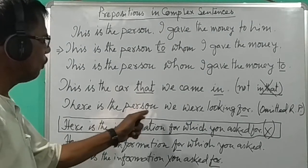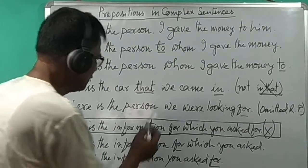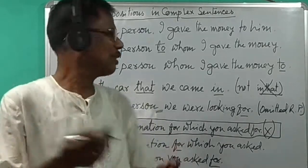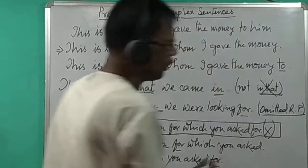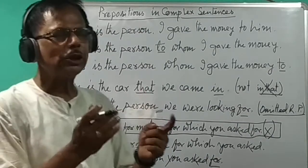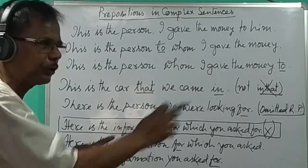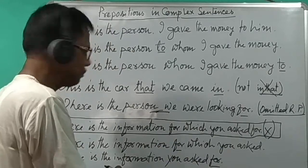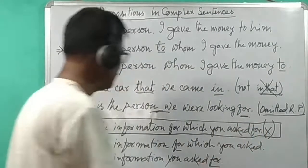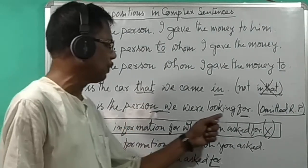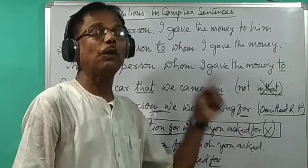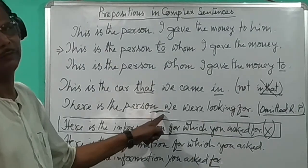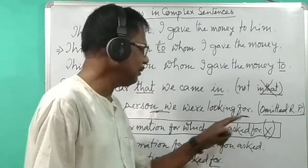There is the person we were looking for. Here, the relative pronoun — 'that' or 'who' — is omitted. In case of omission of the relative pronoun, because there is no connective, the preposition goes to the end of the sentence: 'There is the person we were looking for.'